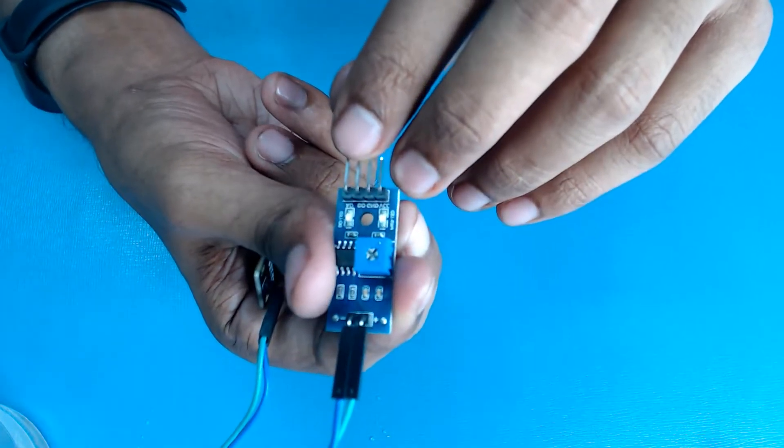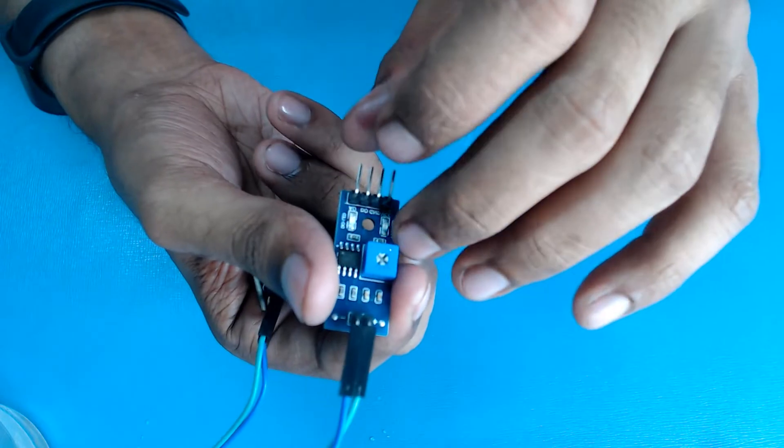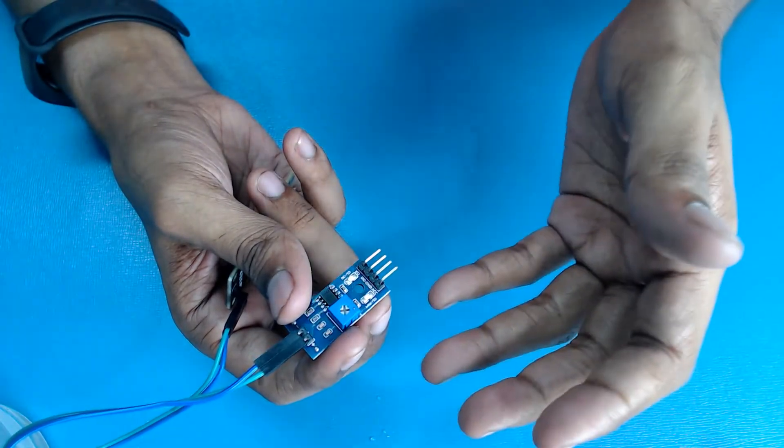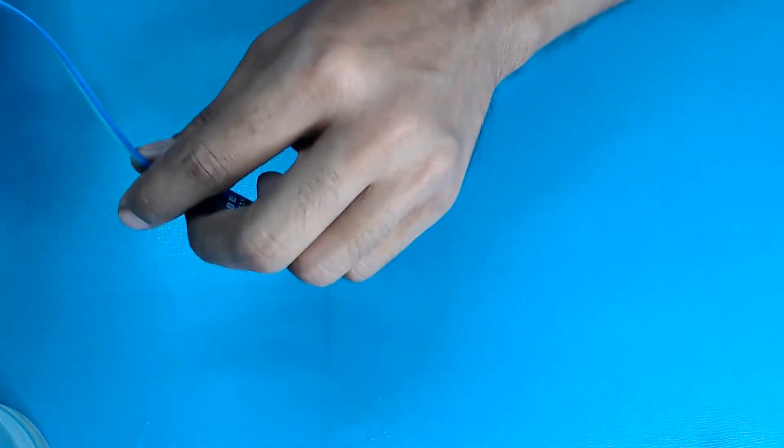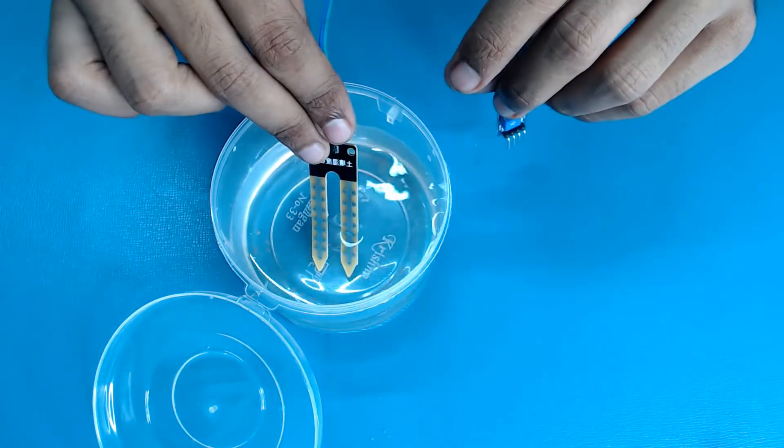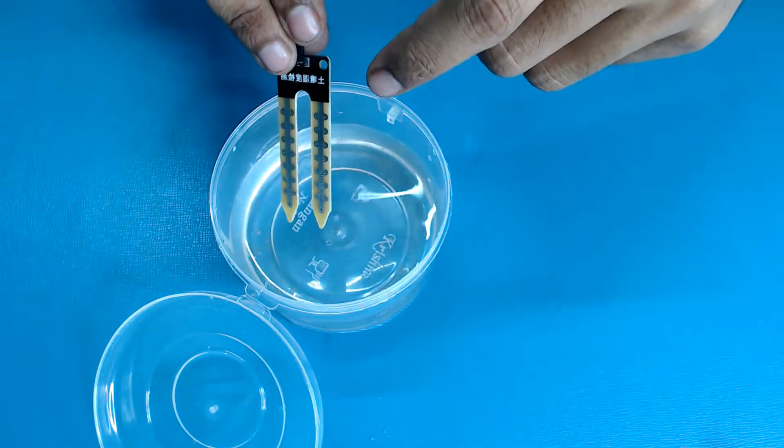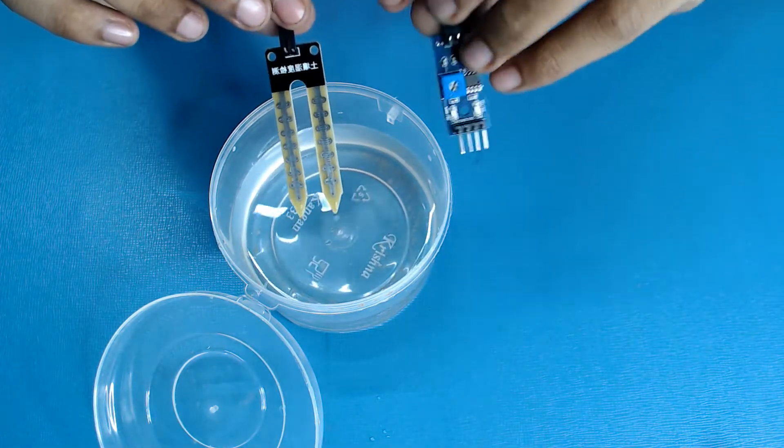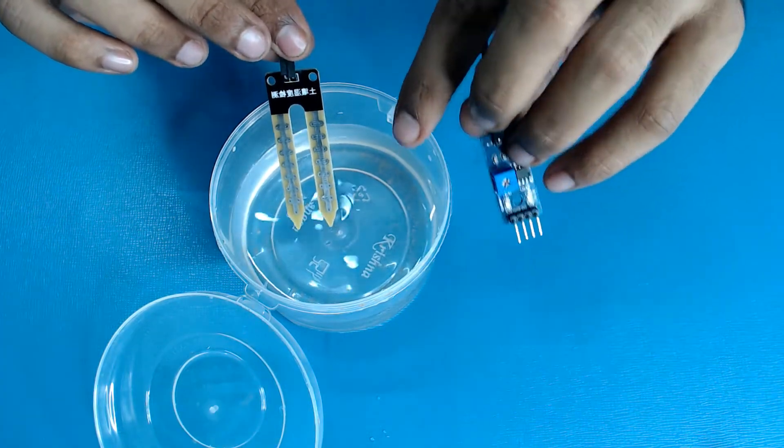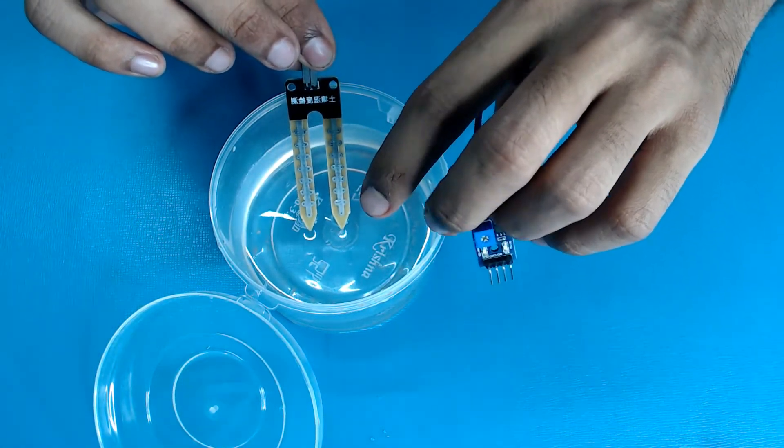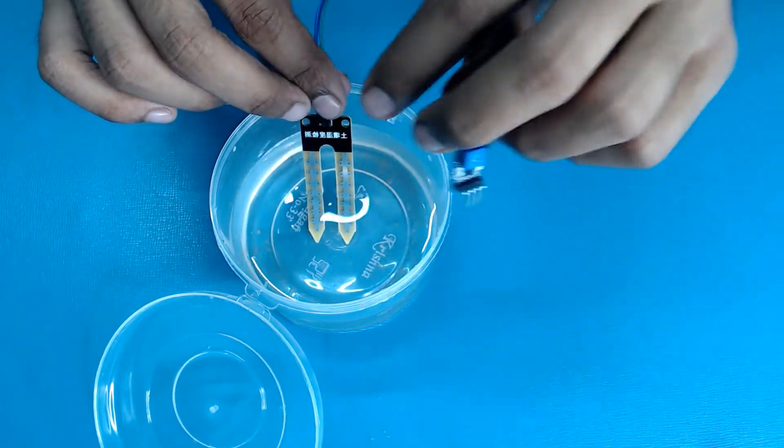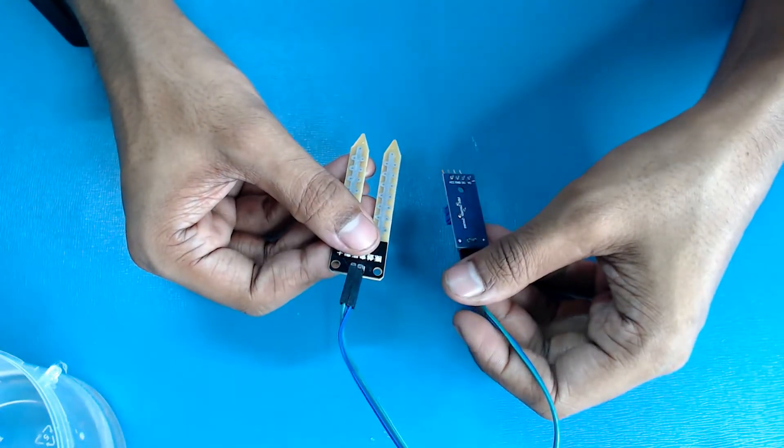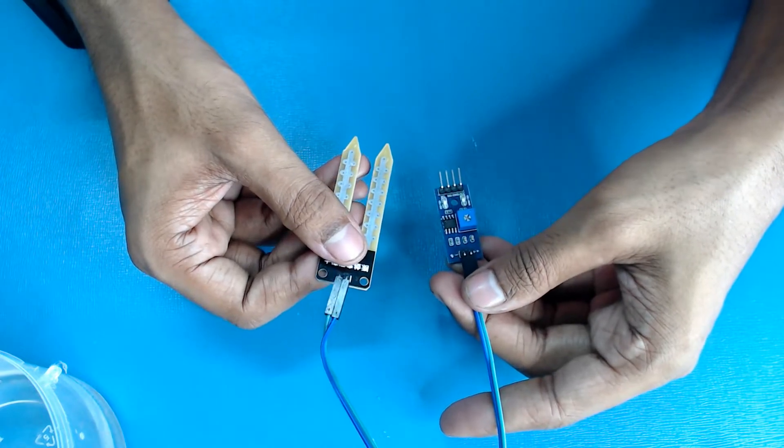The remaining two pins are output pins. With this soil moisture sensor, we can get analog output as well as digital output. Digital output gives us only whether it has moisture or not - yes or no. But with analog output, we get values showing how much conductivity there is. When I dip it a little, it gives a lower value; when I dip it more, we get a higher value.